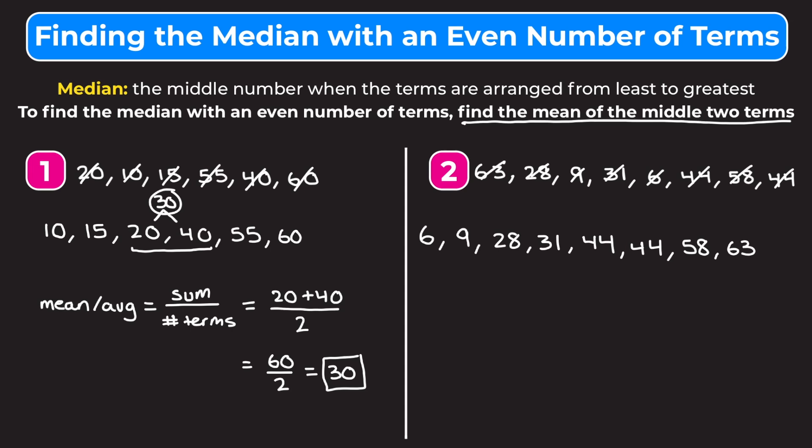We have to find the average of the two middle terms, and the two middle terms are 31 and 44. So we're going to write mean/average is equal to the sum divided by the number of terms.